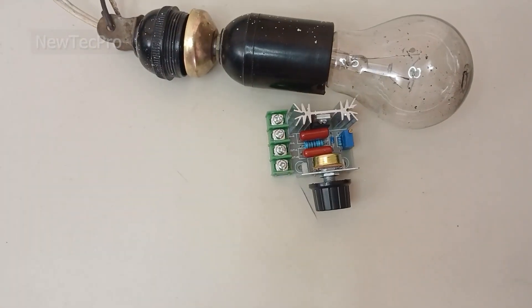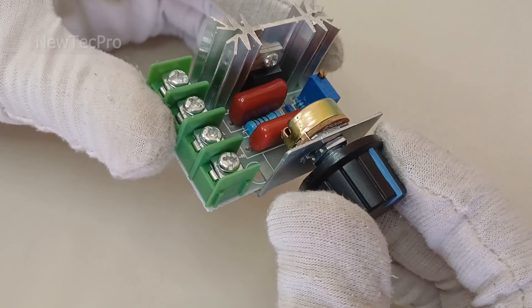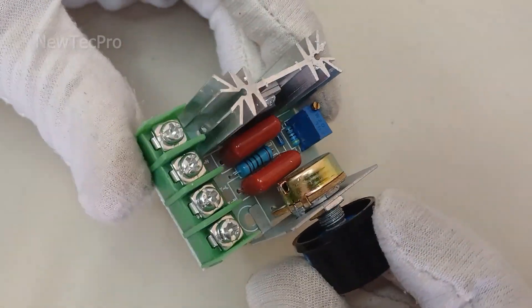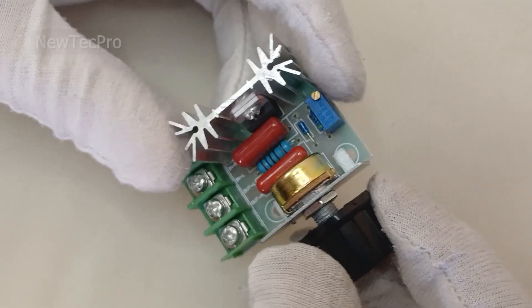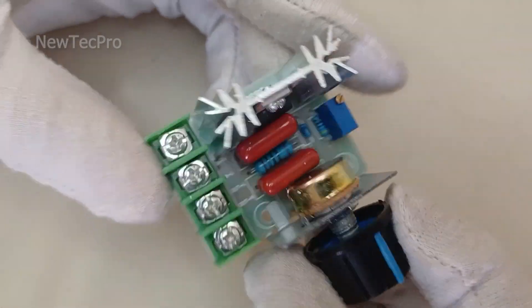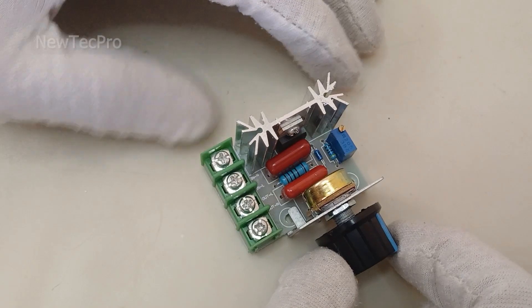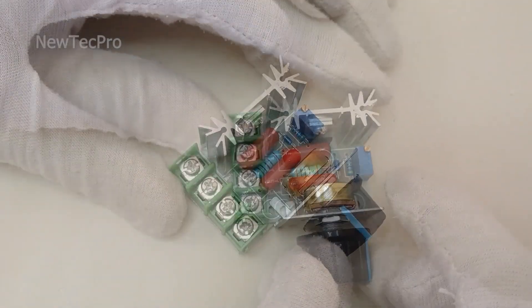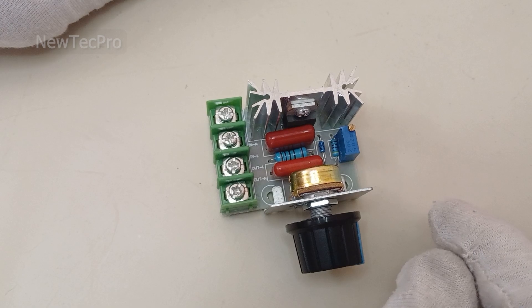Let's take a closer look at the dimmer. This is a 2000 watt AC 220 volt dimmer, perfect for high power appliances and lighting. You can find this in hardware stores or online - link in description.